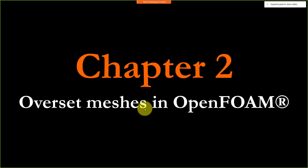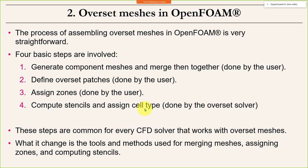Setting up Overset Meshes in OpenFOAM is very straightforward — extremely similar to what you find in commercial software. The basic steps are: generate your component meshes (using any software — blockMesh, snappyHexMesh, or external meshing tools), then merge them together. Define overset patches and boundary conditions — there is a specific boundary condition where you need to interpolate. Assign zones and grid priorities to define how you want to interpolate. Then the stencils are computed automatically by the solver. These are the four basic steps.